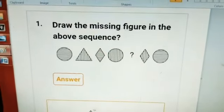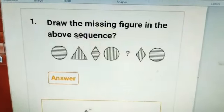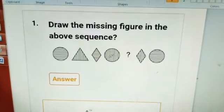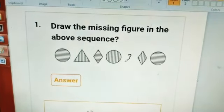Our first puzzle is: draw the missing figure in the above sequence. Here circle, triangle, rhombus, then again circle, then question mark.